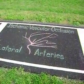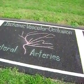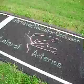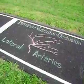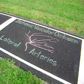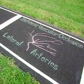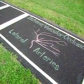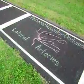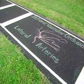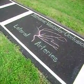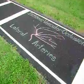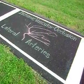Ischemic vascular occlusion. The signs and symptoms of ischemic vascular occlusion based on specific arteries is as follows. The common carotid artery: ipsilateral eye, distal vessels — may be asymptomatic.